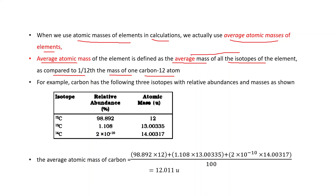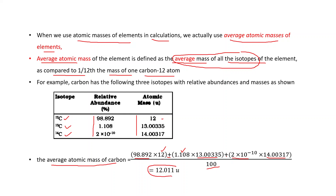With the help of an example, we will explain average atomic mass. There are three isotopes of carbon: carbon-12, carbon-13, and carbon-14. Their relative abundance in nature is given in percentage, and the atomic mass of each isotope is given in U. We find the average atomic mass of carbon by multiplying the relative abundance of carbon-12 by its atomic mass, plus carbon-13's abundance times its atomic mass, plus carbon-14's abundance times its atomic mass, all divided by 100. Solving this gives 12.011 U, which is the average atomic mass of carbon.